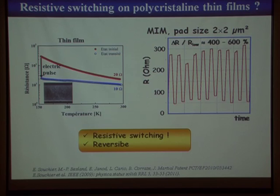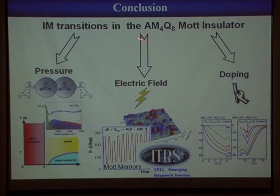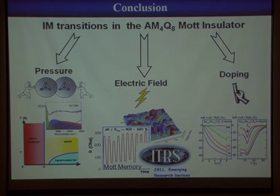In conclusion, we have a new family of Mott insulators — AM₄Q₈ — that behaves like canonical Mott insulator compounds, even if it is not as famous as VO₂, NiS, or V₂O₃. It shows pressure-induced and doping-induced insulator-to-metal transitions, and near the IMT we revealed ferromagnetic metal behavior, colossal magnetoresistance, and superconductivity. Moreover, these compounds are highly sensitive to electric field, showing resistive switching triggered by the electric field — one of the first such examples — with promising room-temperature behavior for memory applications.